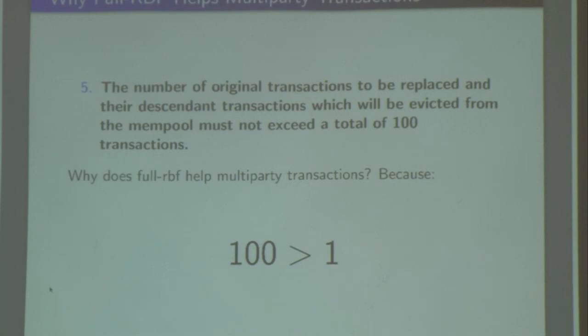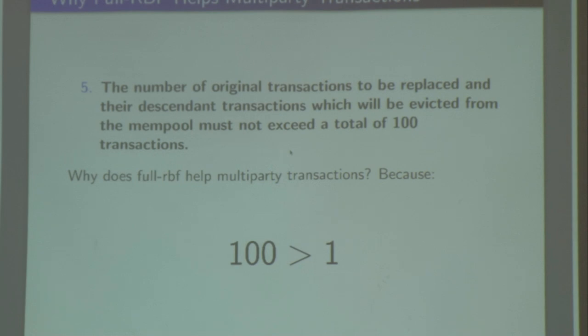Rule 5 — the 100-transaction limit — is the only rule really relevant in this type of pinning attack. But if I'm forcing the attacker to create 100 transactions in a row, they're tying up more money. And if the fee is high enough to get mined in a reasonable amount of time — which is what it would take to not get replaced — they're paying 100 times more money when it does get mined. Frankly, I think Suhas is wrong on this.